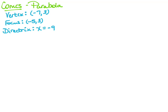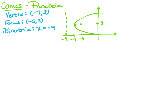In this first example, we're looking at a parabola. It has a vertex at (-7, 3), a focus of (-5, 3), and a directrix that's x equals negative 9. So I'm going to start out by sketching this graph. The vertex is at (-7, 3), the focus is at (-5, 3), and the directrix is over here at x equals negative 9. Based on the positions of these points and this line, I can see that my parabola is going to be a horizontal parabola, and it's going to open to the right.